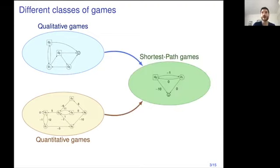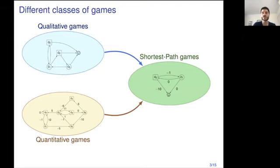Of course, you can combine both qualitative and quantitative objectives, having in mind that you want to achieve a qualitative objective for sure, and then optimize along certain quantities. An example of such games are shortest path games, where you want to reach a certain target state while minimizing the total payoff along the way.